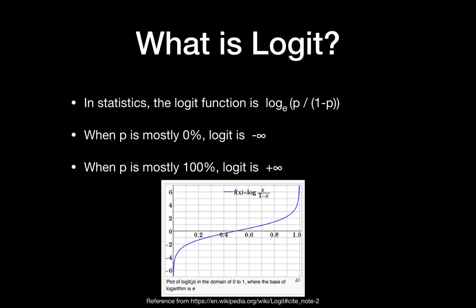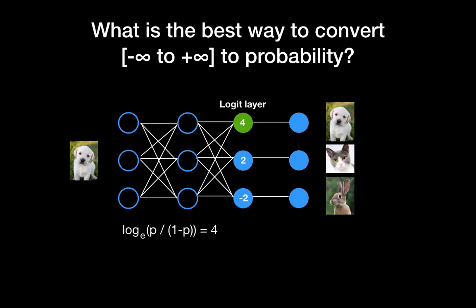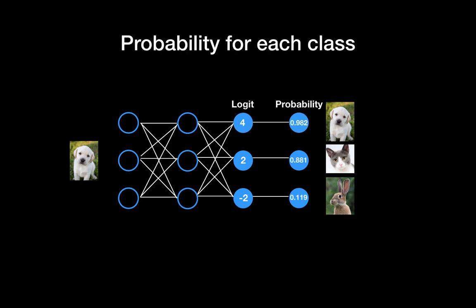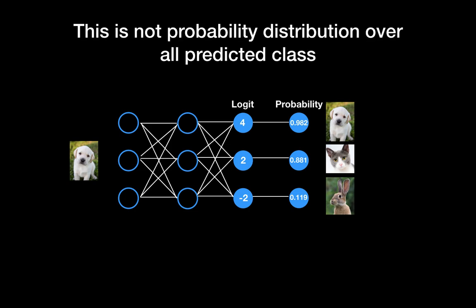Since logit is monotonically increasing with probability, if the deep learning model outputs logits, we can use them as a score for probability. We can think of the last layer from our example as a logit layer, and we can get the probability using the logit equation. For example, we get about 98.2% for the dog, along with probabilities for the cat and rabbit.